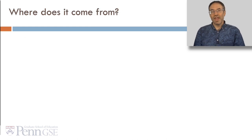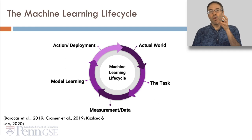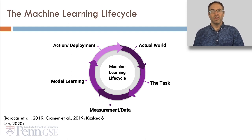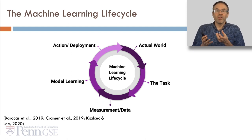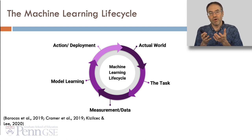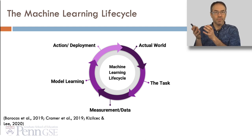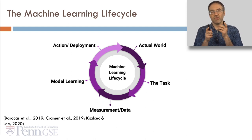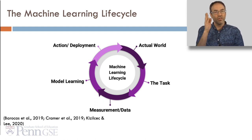So, where does Algorithmic Bias come from? One way to understand this is to look at the machine learning lifecycle, where we start at the top right with the actual world state — how things actually are. We determine something we want to predict or infer, collect measurement or data for it, build a model based on that data to make the prediction, and then deploy it in the real world to drive some intervention. That intervention changes the actual world, which starts the entire cycle over again.